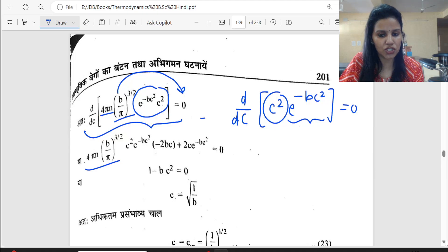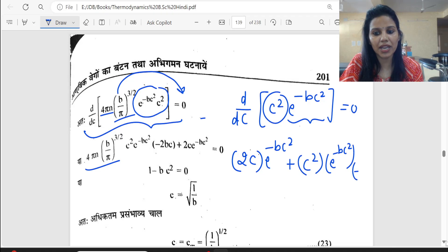Keep exponential constant, C square gives 2C times e to power minus bc square as it is, plus C square as it is, e to power minus bc square into minus bc square derivative, which is minus 2bc, equals zero.